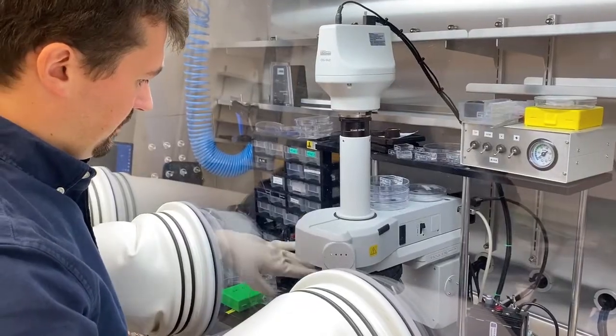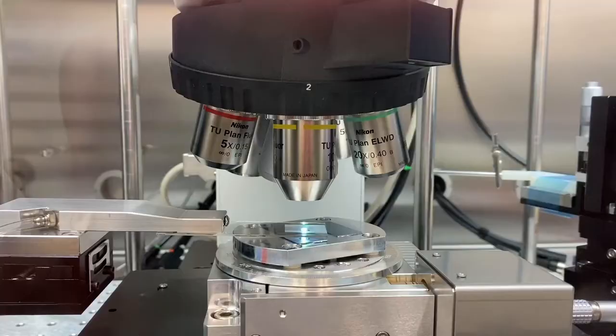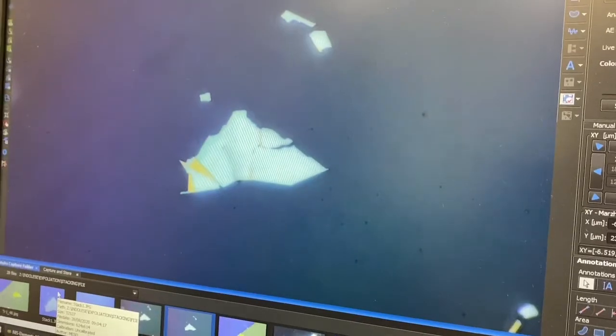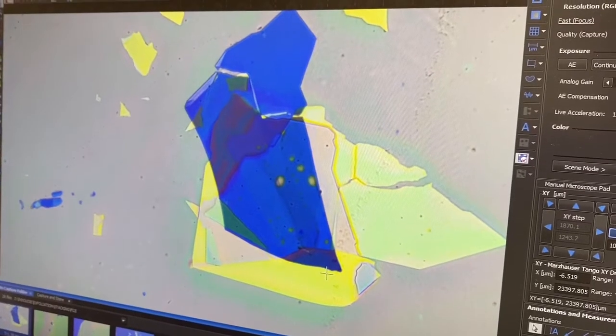The van der Waals heterostructure was fabricated by using a thin polycarbonate film, and then we picked up one layer after the other. The layers are stacked or kept together by van der Waals interactions.